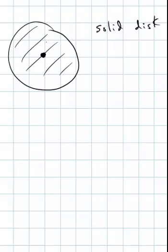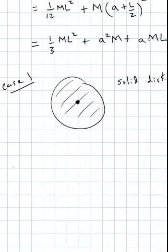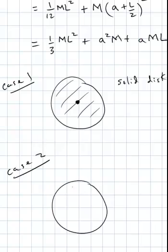But let's say we move this disk over. So this is case one. Now we want to do this situation. Where the axis of rotation is not through the center of our solid disk. But it's over here.